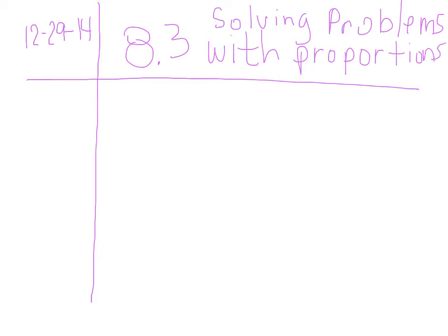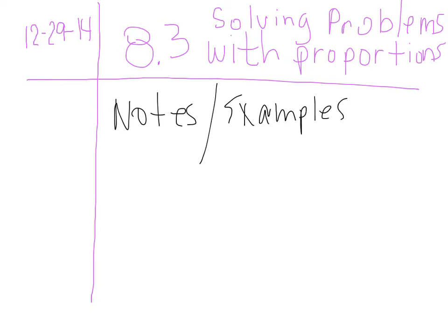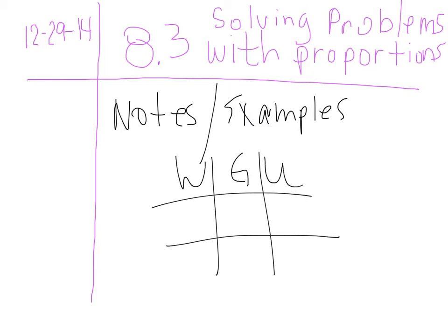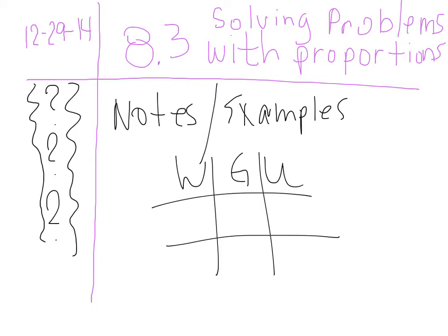All the notes I give you are going to go here — notes and examples — so when I give you some examples, you're going to write them here. You're going to see some things called a WGU table. Over here is where you're going to ask all those questions, like how did you get this number, or how do you find the missing number? All those things you don't understand, write over here. That's our Cornell Notes style.